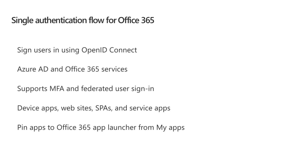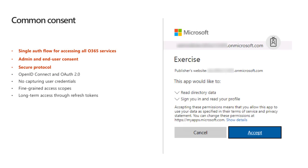For the single authentication flow for Office 365, users first sign in using OpenID Connect, which is a layer on top of Azure AD OAuth and gives you some identity information in the response. Azure AD and Office 365 services can leverage this authentication model, and it supports Microsoft federated authentications, multi-factor authentication, and federated user sign-ins. We can work with device apps, websites, single page applications, and service apps as well. The authentication endpoint also enables the common consent framework, which defines permissions our application needs.